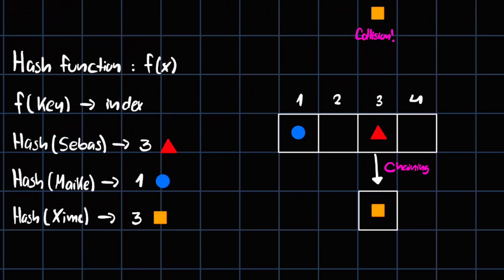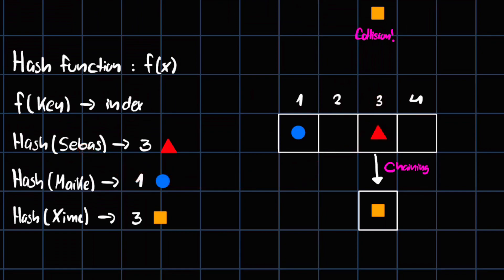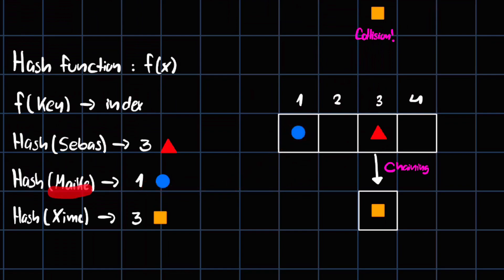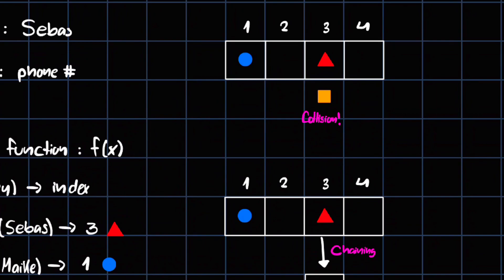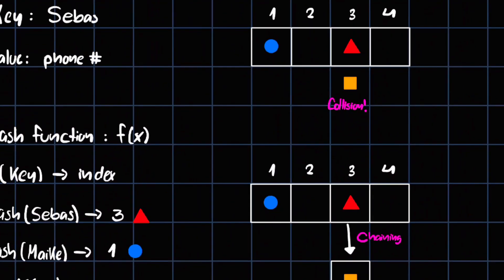Let's give an example. We have hash('sebas') — that's my name — and it returns the number 3. This means we store the element for 'sebas' into index 3. Same thing for 'maike': the hash function returns 1, so we put the element for 'maike' with key 'maike' and a certain value into index 1.